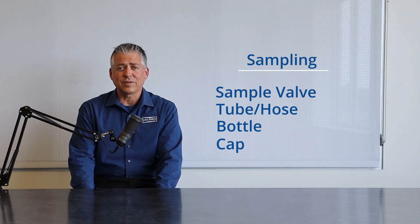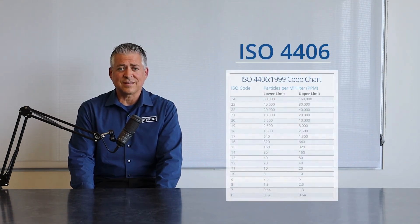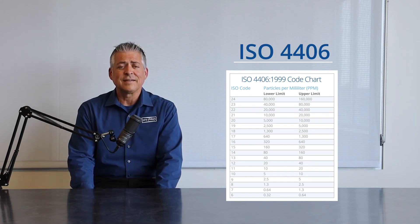So, again to review, ISO 4406 is the ISO cleanliness code chart that is used internationally for a quick snapshot of concentration of particles in your system. For more information, for example, on how much contamination is in your system, you can download our app on either Google Play Store or Apple App Store.